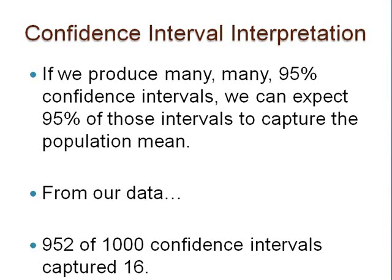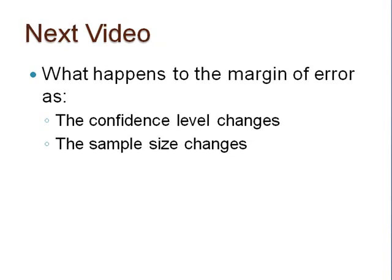In this video, we learned what will happen if we constructed many confidence intervals. Remember, in reality, we collect one sample, find one sample mean, and construct one confidence interval to gain understanding about the unknown population mean mu. We simulated taking many sample means because we wanted to get a better understanding of the confidence interval's interpretation. In the next video, we will find out what happens to the margin of error of a confidence interval as the confidence level and the sample size change. Thanks for watching.